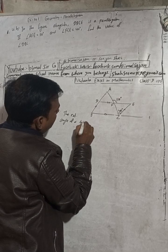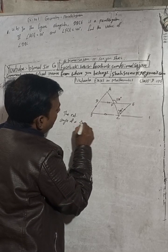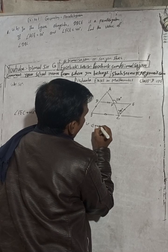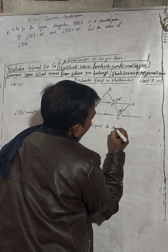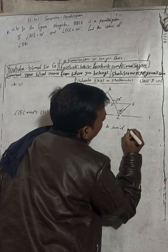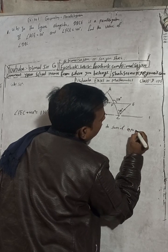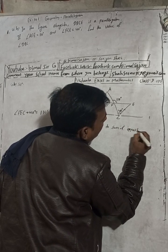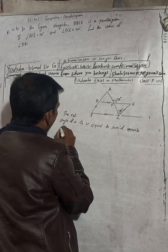The exterior angle of a triangle is equal to sum of opposite interior angles.